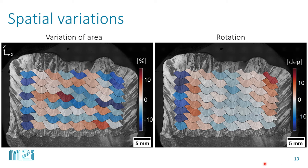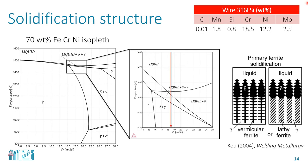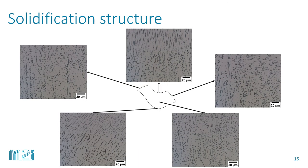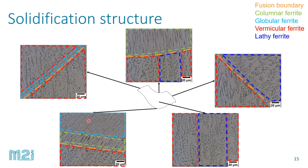These rotated fusion zone shapes also explain why you have the rotated grains towards the edges. Now, regarding the solidification structure: based on the composition, this material should have primary ferrite solidification, but we have an austenitic structure. Based on welding theory, because of the fast cooling, we expect an austenite matrix with a dendritic ferrite structure. We took several higher magnification micrographs and indeed identified this austenite matrix with dendritic ferrite. We also see different morphologies across the part — mostly vermicular and lathy in the bulk, but close to the fusion boundary we have other unstable morphologies such as columnar and globular.